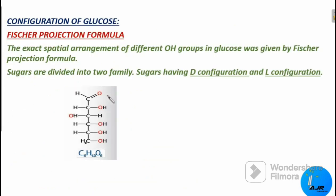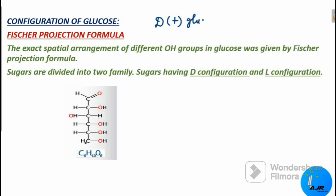Next we shall see the configuration of glucose. The configuration refers to the exact spatial arrangement of the OH groups present in glucose. The configuration of glucose was given by Fischer, and it is therefore called the Fischer projection formula. Glucose is correctly named as D(+)-glucose.